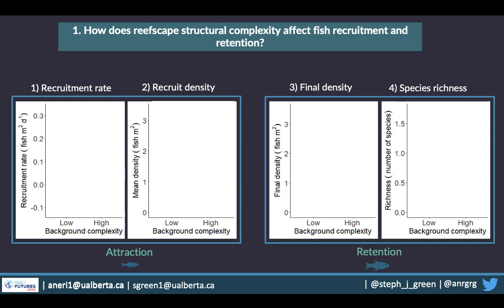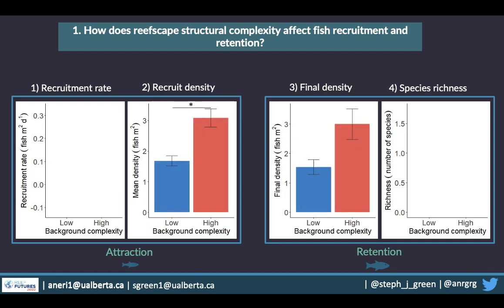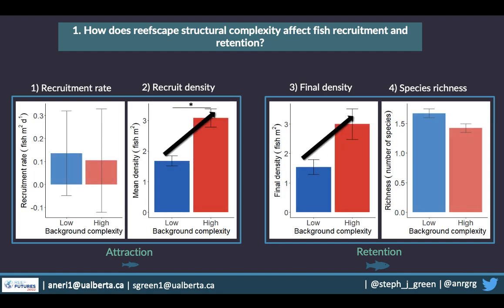Looking at the effect of reefscape structural complexity on background recruitment — plots without any added structure — we find that depending on the metric, recruitment rate or species richness is similar between low and high complexity areas. However, recruit density over the course of the experiment and the final density of larger size classes of fish is higher in high complexity areas. This might not be surprising, but it provides a useful benchmark before examining the effect of adding structure and coral through restoration.